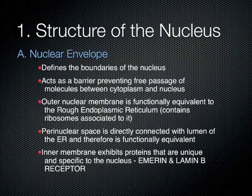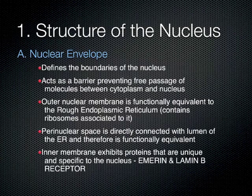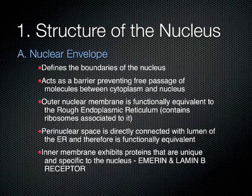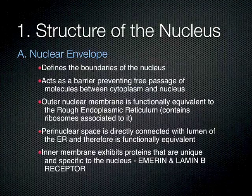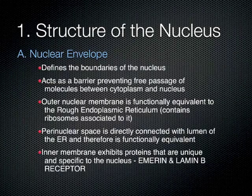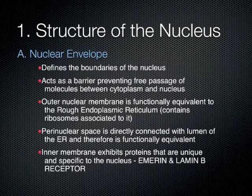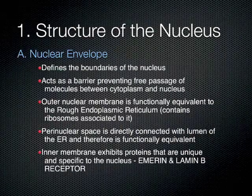In summary, the nucleus contains a nuclear envelope that defines its boundaries and acts as a barrier preventing free passage of molecules between the cytoplasm and the nucleus. The outer side of the nuclear envelope is functionally equivalent to the rough endoplasmic reticulum because it contains ribosomes. The perinuclear space — the space between the outer and inner nuclear membranes — is continuous with the lumen of the ER, and is therefore functionally equivalent to it. Any metabolic activity associated with the ER lumen will also be found in the perinuclear space.